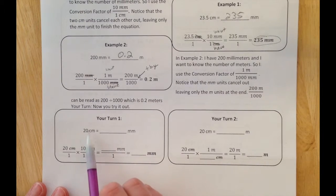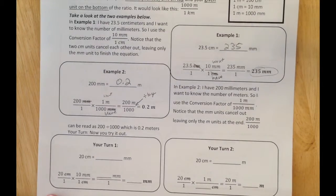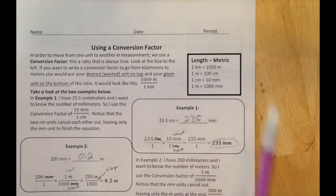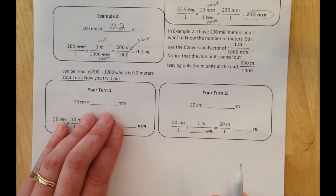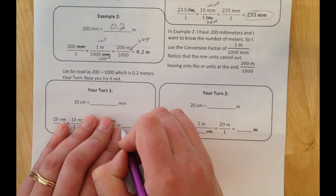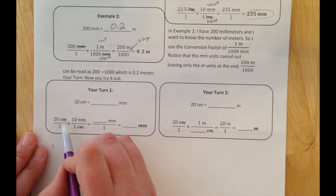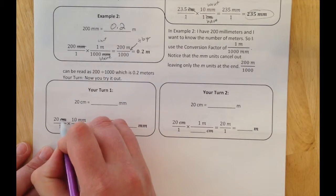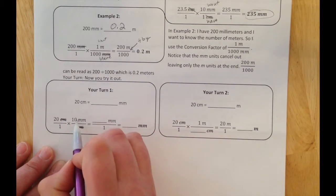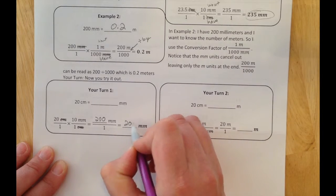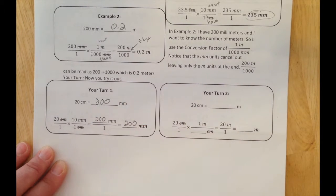Let's try a couple more. You have 20 centimeters and want to go to millimeters. Which conversion factor are you going to use? 1 centimeter is 10 millimeters. I have centimeters and want millimeters, so centimeters goes on the bottom and millimeters on top. 20 centimeters over 1 times 10 millimeters over 1 centimeter. The centimeters cancel, so 20 times 10 is 200 millimeters.